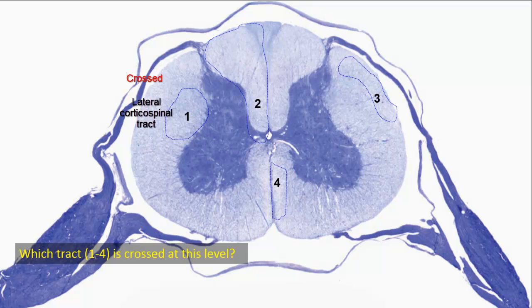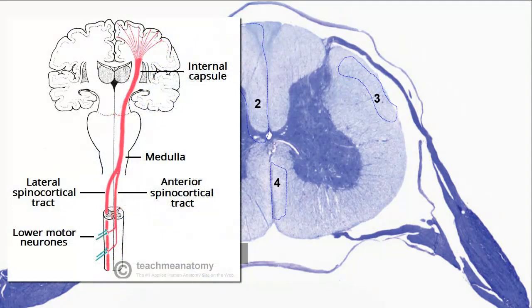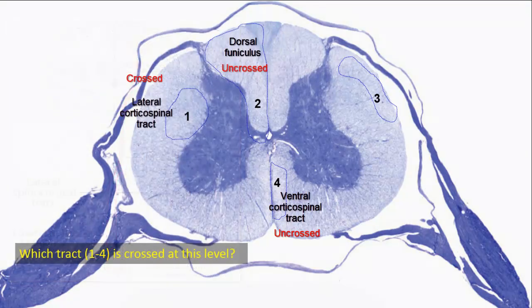The small amount of fibers that do not cross at the pyramidal decussation — the 25 to 10% of fibers — form the ventral corticospinal tract, which is in position 4. Position 2 is the dorsal funiculus, containing fibers of ipsilateral first-order neurons located in the dorsal root ganglion. Position 3, at the periphery of the posterior aspect of the lateral funiculus, is the posterior spinocerebellar tract, with cell bodies located in the ipsilateral Clarke's column. So the only crossed tract here is 1, the lateral corticospinal tract.